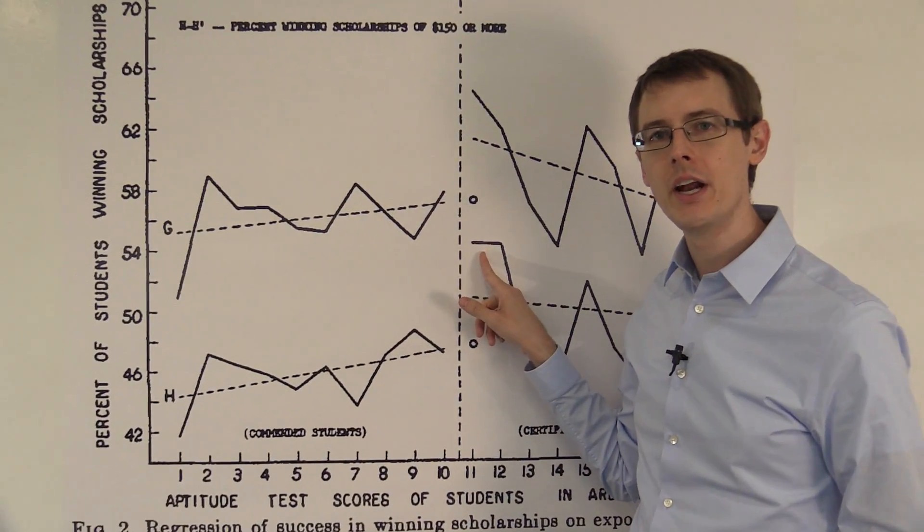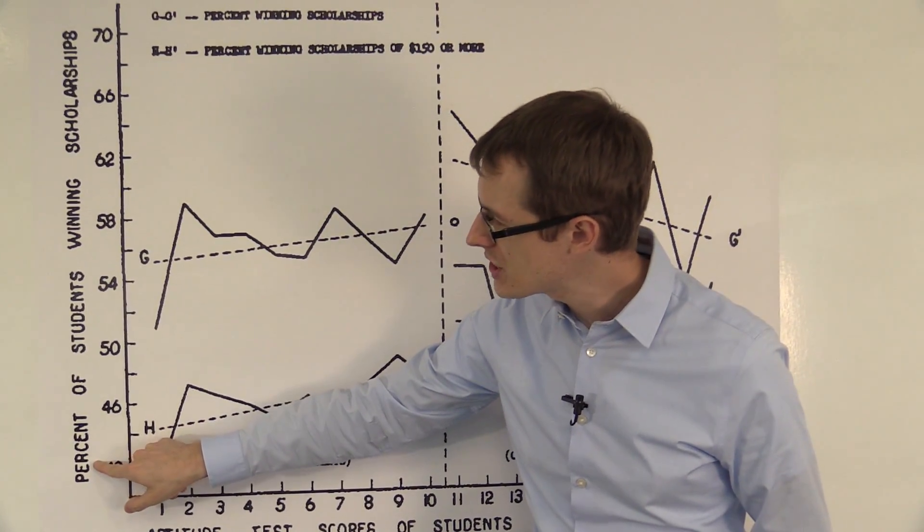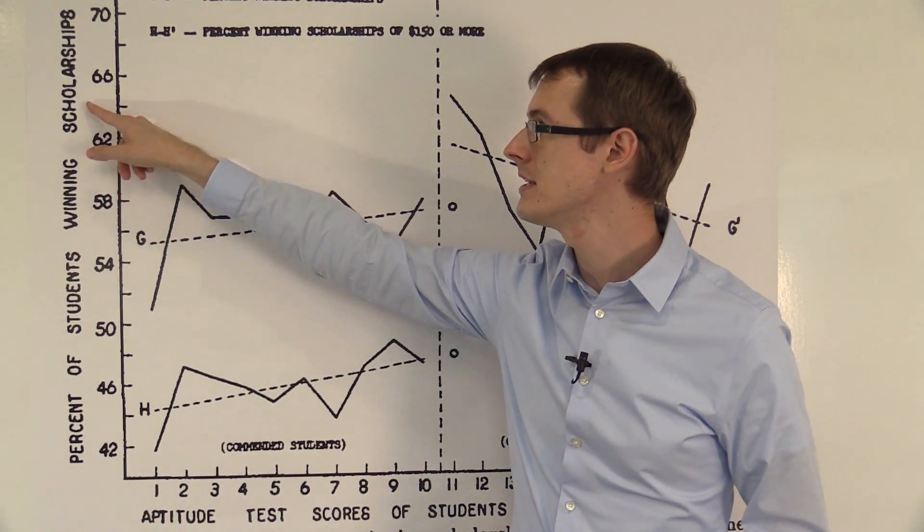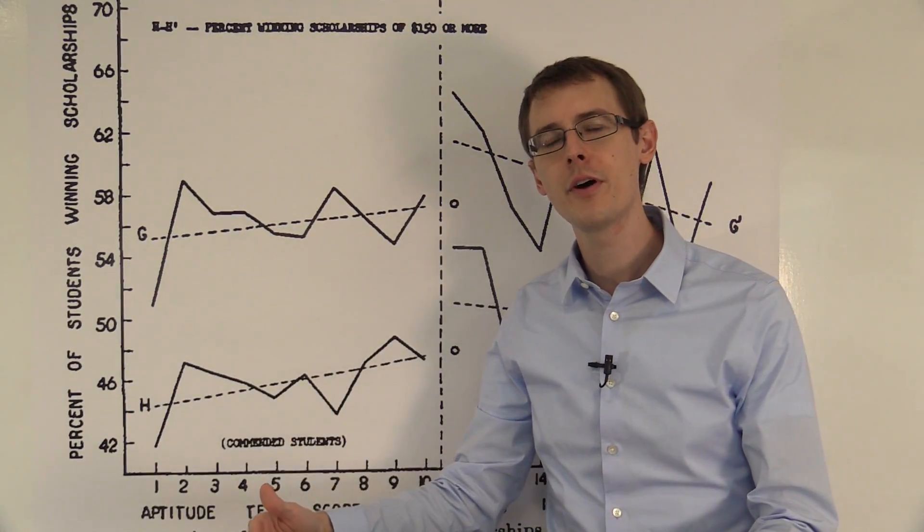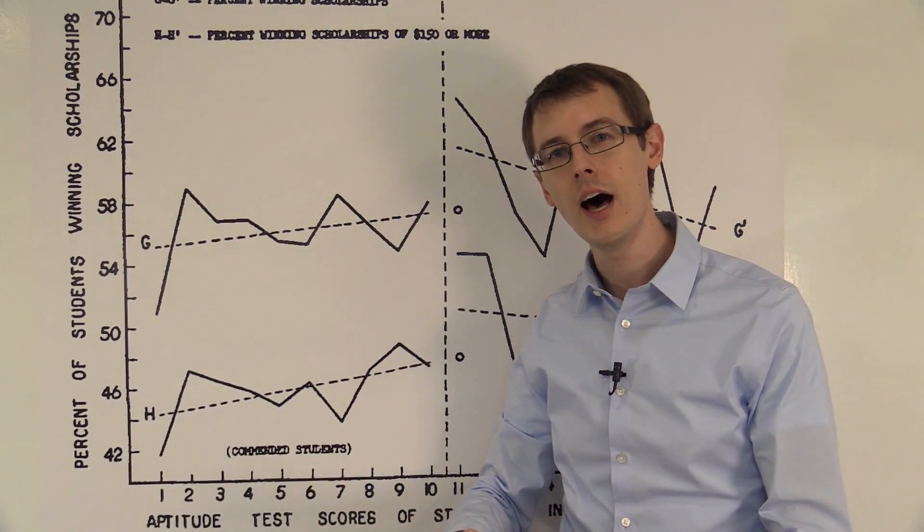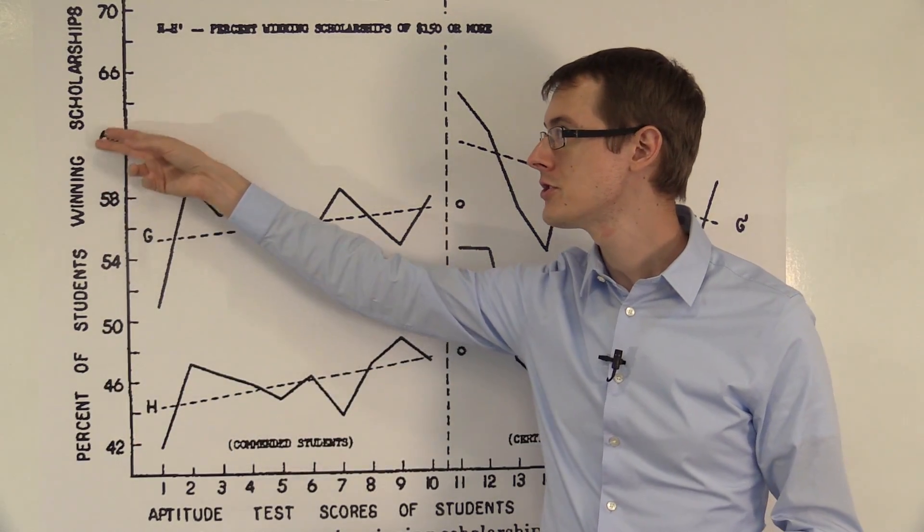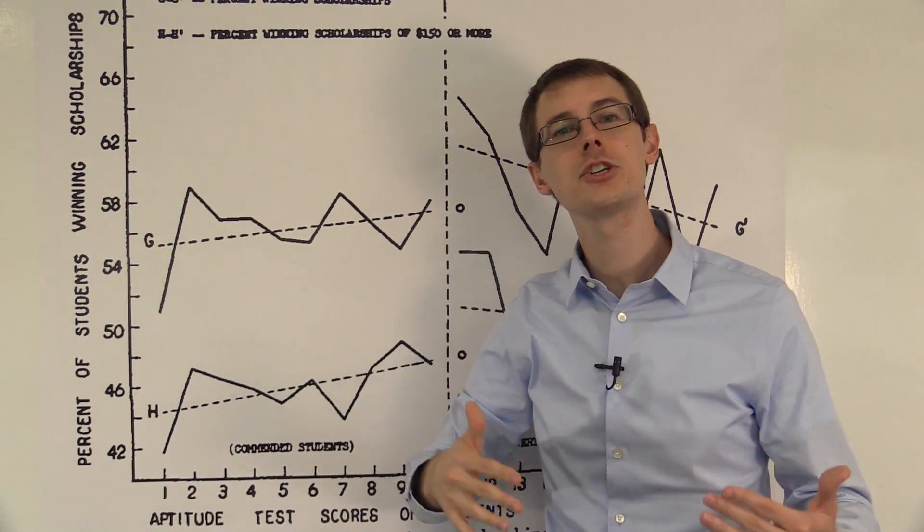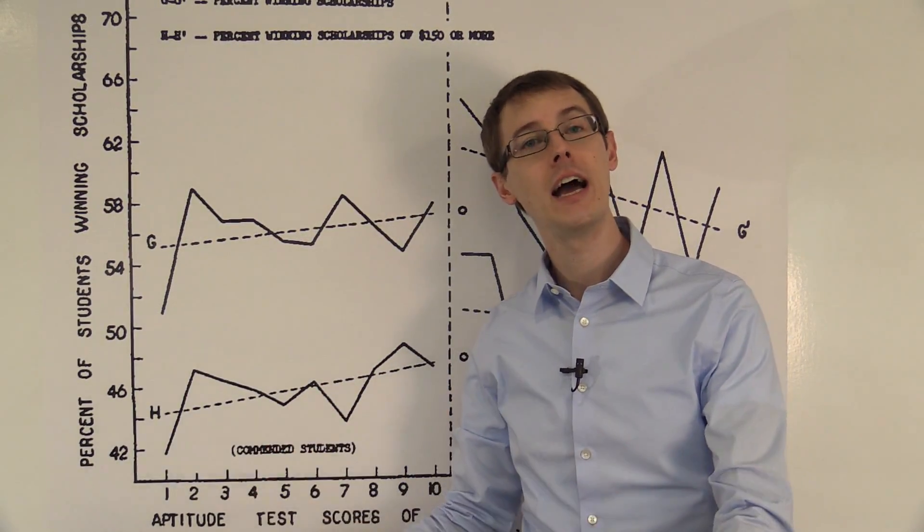Well, that's exactly what's plotted on this chart, because it's the percent of students winning scholarships. When the outcome variable is binary—one or zero, did you win the scholarship or not—the percentage of the units who won the scholarship is actually equal to the average outcome.